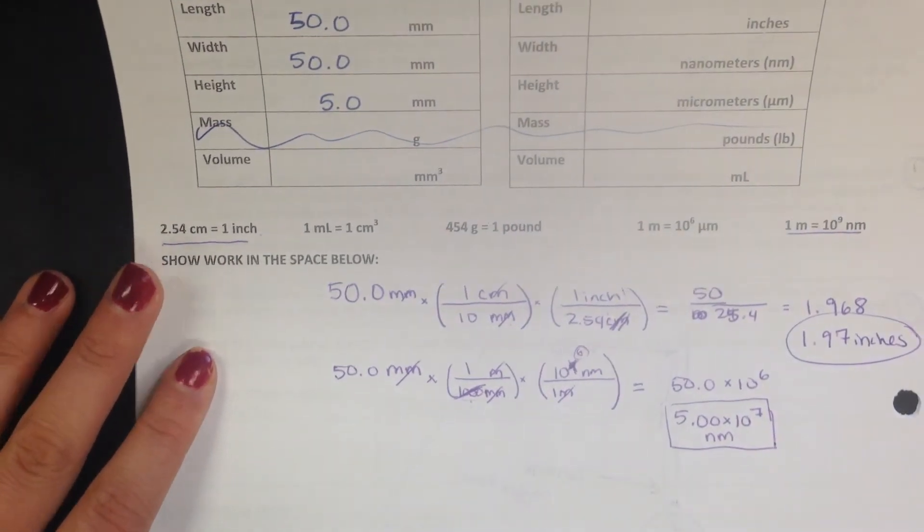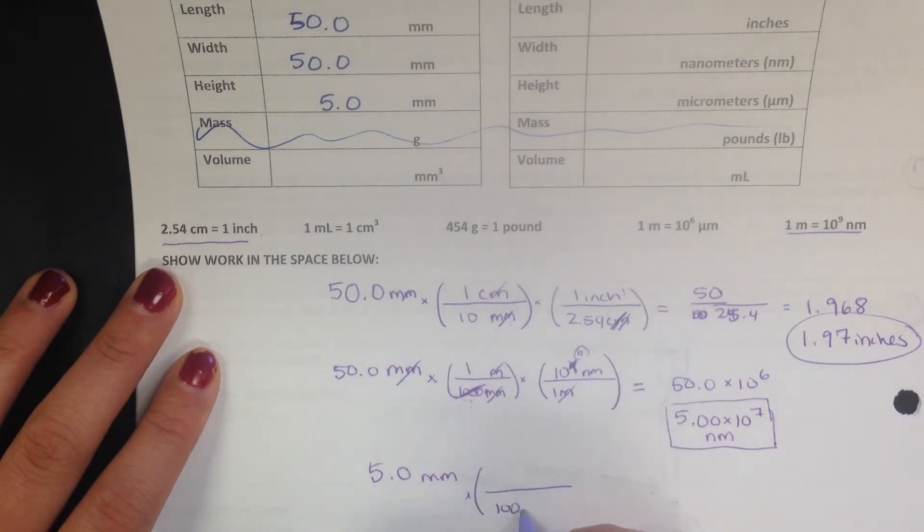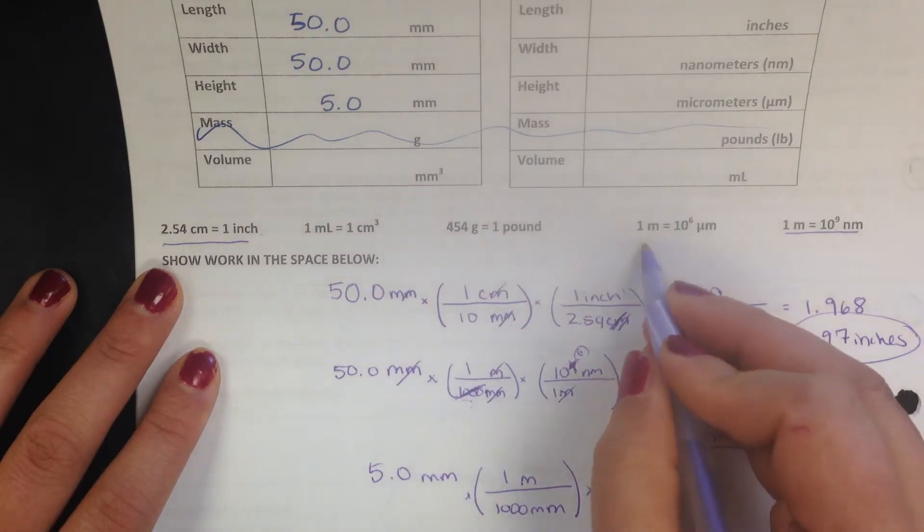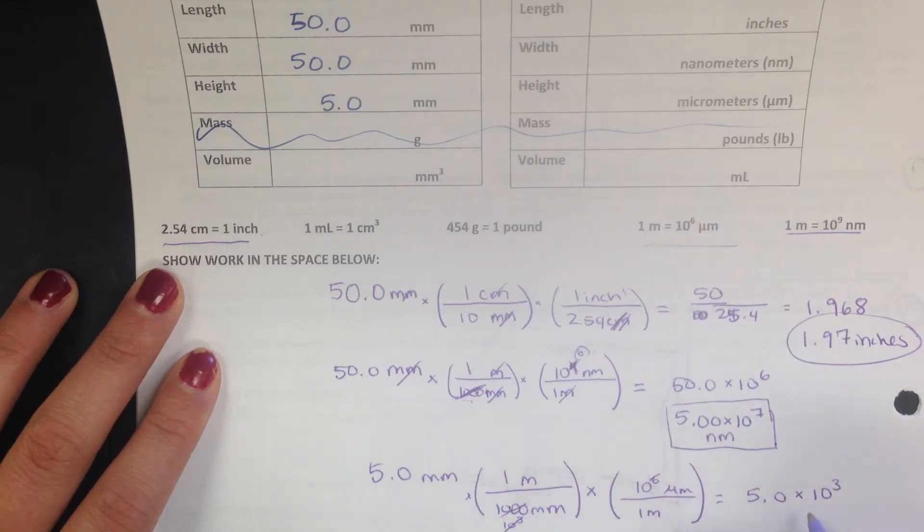Okay, micrometers. Similar. Start with the given, 5.0 millimeters. I have to go to centimeters. 1,000 millimeters in one meter. Now I go to micrometers. One meter has 10 to the sixth micrometers. This is 10 to the third, that's 10 to the sixth, so 10 to the third and 10 to the sixth will simplify. I'll get 5 times 10 to the third micrometers.